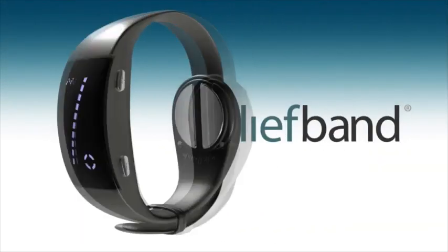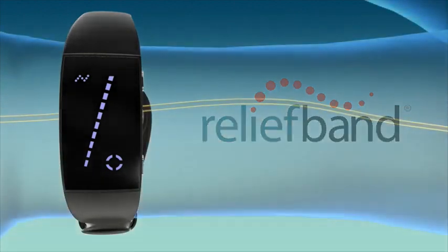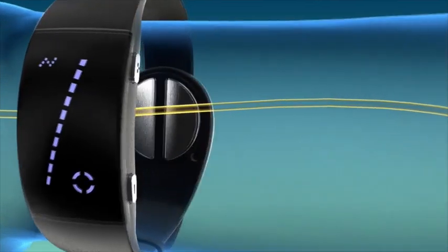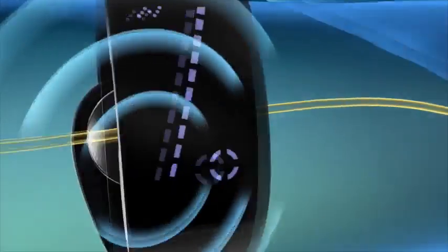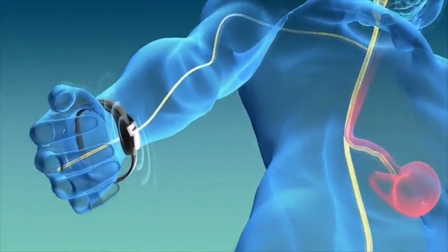Relief Band is wearable technology that puts you in control of nausea and vomiting without drugs. Relief Band works by generating a pattern of highly specific pulses that modulate the median nerve on the underside of the wrist using a process called neuromodulation.